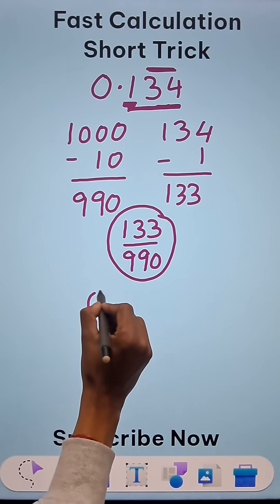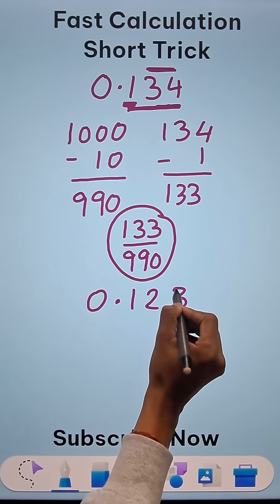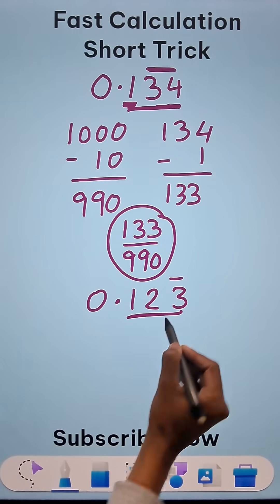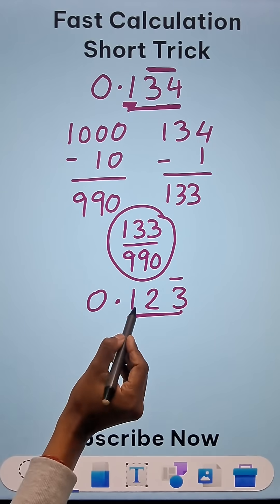Likewise, suppose you have 0.123 and only 3 has a bar over it. Then what will be the representation? So this is 1000 and there are 2 digits which do not have a bar.